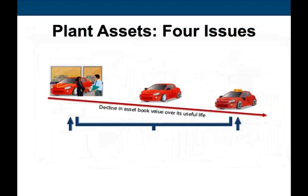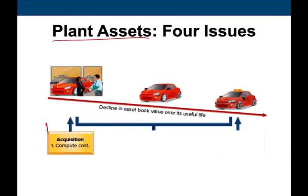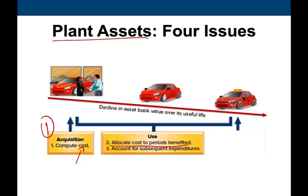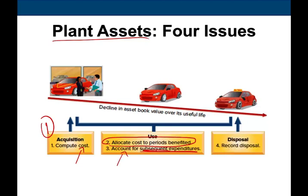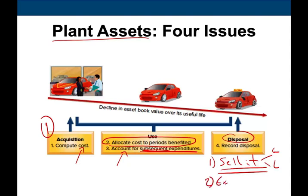Exchange of plant assets is part of the life of a plant asset. When we buy a plant asset, the first thing we worry about is recording the asset at cost. Then we depreciate the asset, allocating the cost to the period benefited. Then we account for subsequent expenditures, and then we dispose of the asset. Under disposal, we can sell it — which we already covered — and now we are going to exchange the asset.